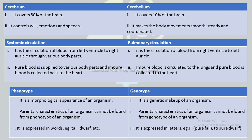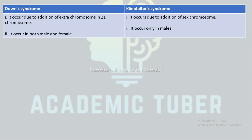The next difference is between Down syndrome and Klinefelter syndrome. Down syndrome occurs due to the addition of an extra chromosome at chromosome 21, whereas Klinefelter syndrome occurs due to the addition of a sex chromosome. Down syndrome occurs in both males and females, whereas Klinefelter syndrome occurs only in males.